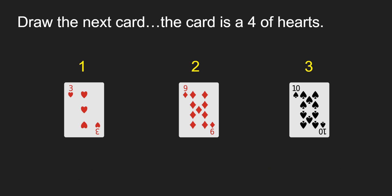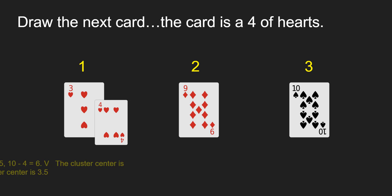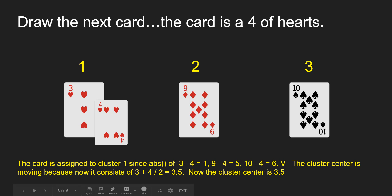Let's draw a card. The card is a four of hearts. We are going to assign that four of hearts to cluster one — not because there's a three of hearts there, or because it's a heart card — but because of the calculation. We try to find which number value the four is closest to, using the absolute value. Three minus four is one. Nine minus four is five. Ten minus four is six. The four is one away from the three, so we put it in cluster one.